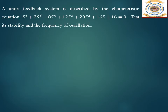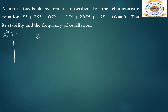Next question: a unity feedback system is described by the characteristic equation s⁶ + 2s⁵ + 8s⁴ + 12s³ + 20s² + 16s + 16 = 0. Test its stability and find the frequency of oscillation. Constructing the Routh array: for s⁶ row: 1, 8, 20, 16. For s⁵ row: 2, 12, 16.